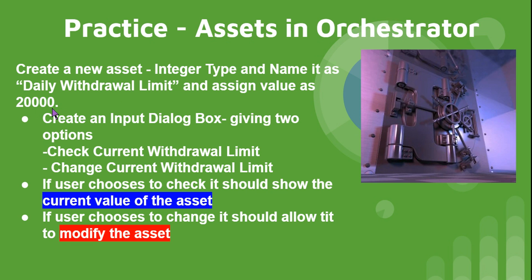Assign a value of 20,000. Then provide an input dialog box with two options: one — check the current withdrawal limit, and two — change the current withdrawal limit. The asset has a default value of 20,000 as the daily withdrawal limit. If the user selects the first option, it should get the asset value and show it in a message box. The second option should go to Orchestrator and change it automatically.